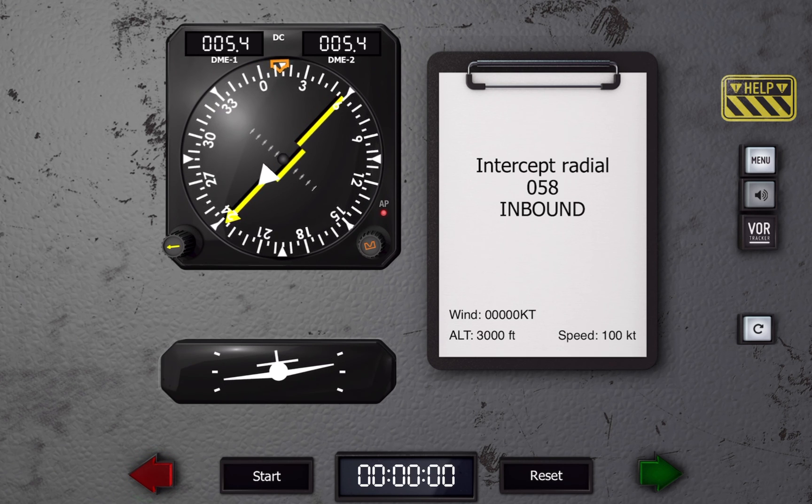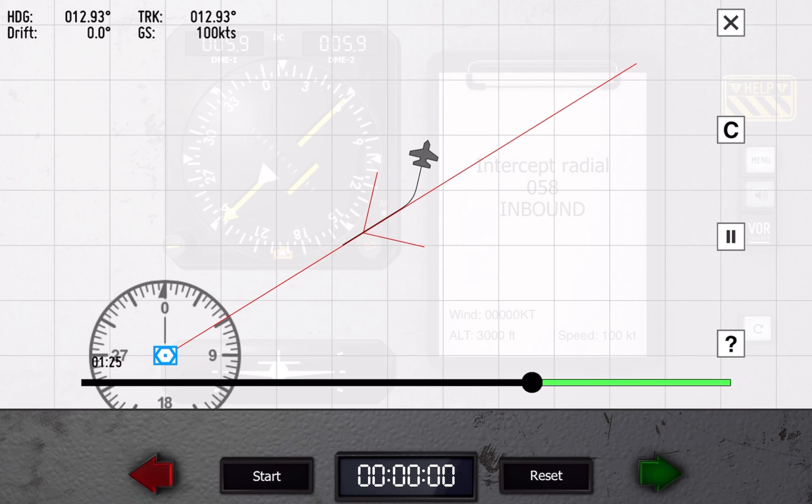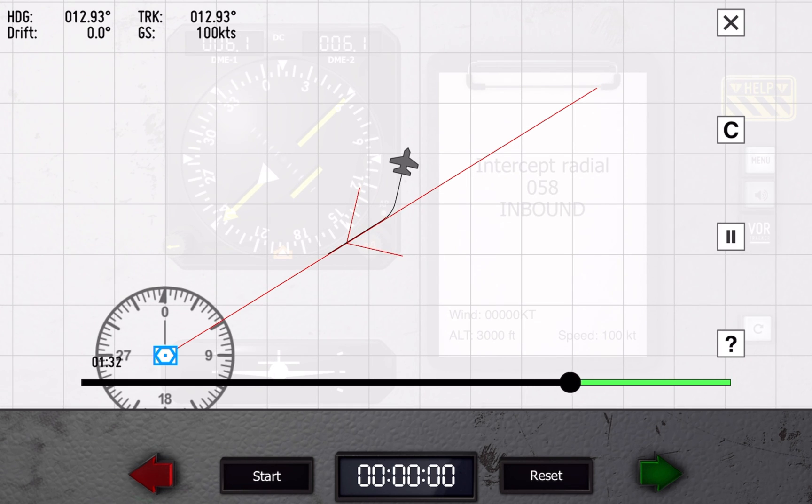We're gonna fly this heading for one minute and then we are gonna turn to the reciprocal or 180 degree turn to get ourselves established on our next phase. So there we go, we'll put a heading bug just around there. We can take a look at the big picture and see how everything is going.